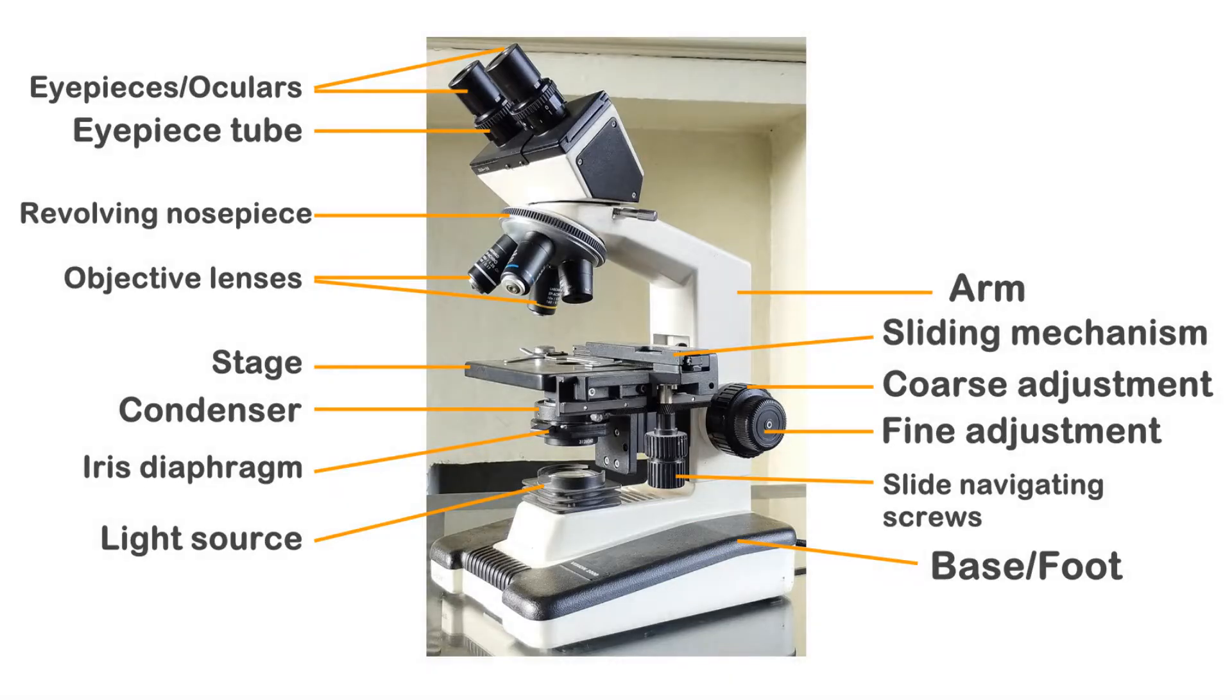To begin with, here's a quick pictorial overview of the different component parts of a typical compound binocular brightfield light microscope that you would normally come across in a biology lab.